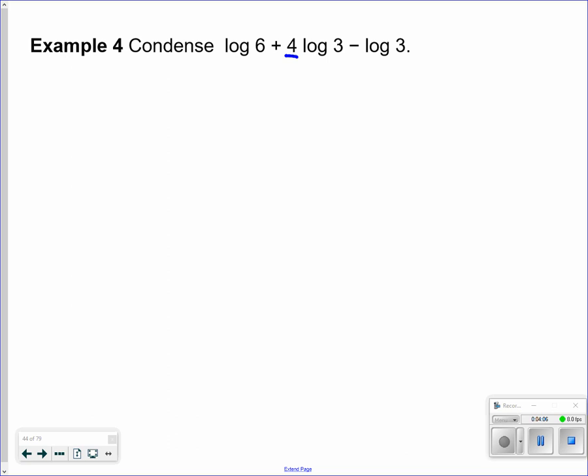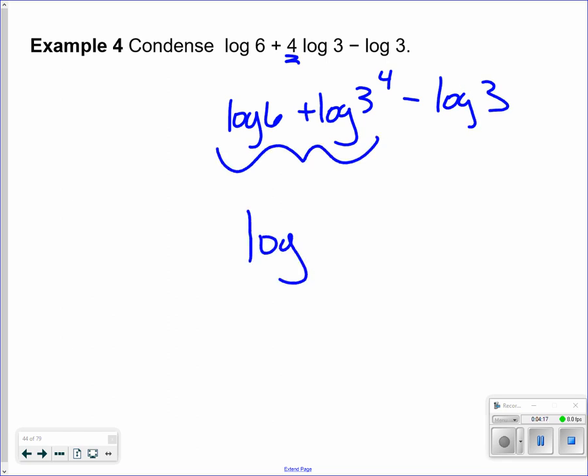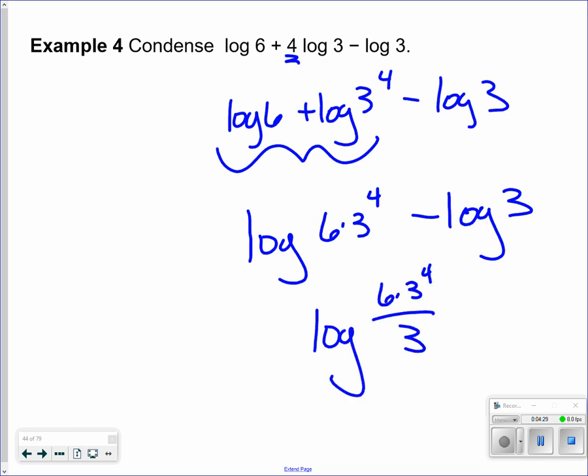Number in front, so I can make that into an exponent. Combine these, so I'm multiplying. Log 6 times 3 to the 4th power. And then log 6 times 3 to the 4th power, being divided by 3. So that is combining it.